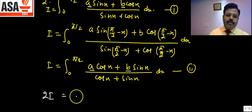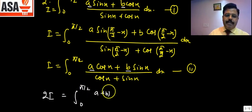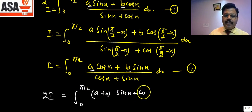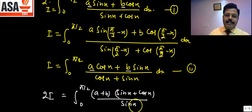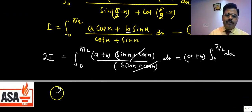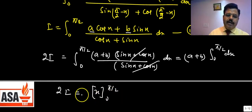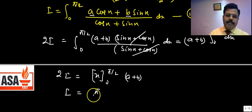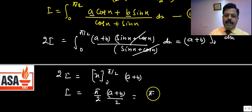Adding equation 1 and 2: 2I = (a+b)·∫₀^(π/2) dx = (a+b)·[x]₀^(π/2) = (a+b)·(π/2). Therefore I = π(a+b)/4. That is the answer.